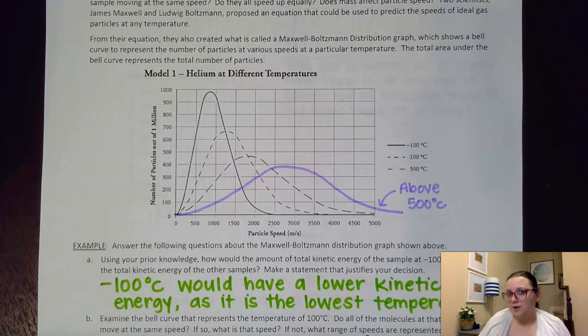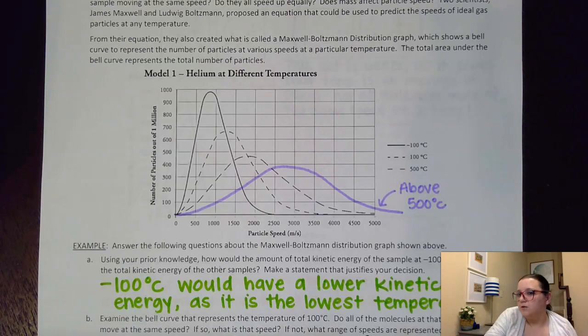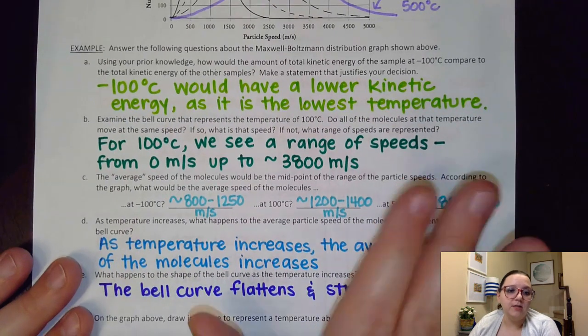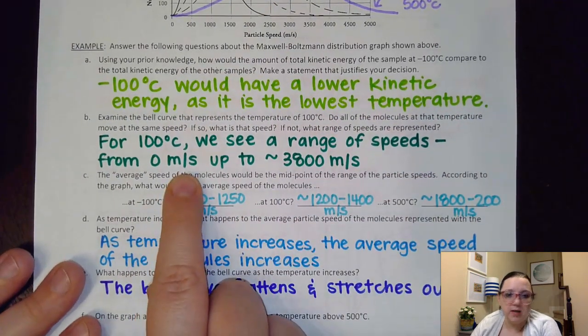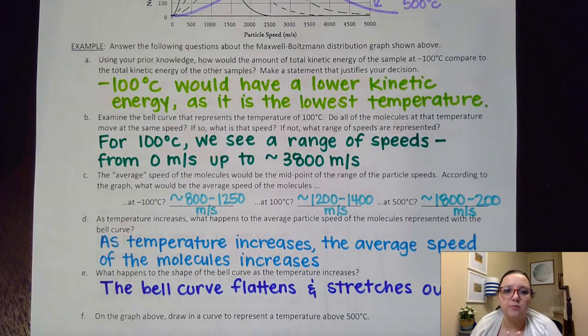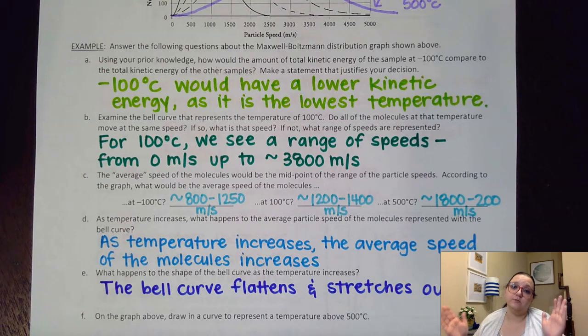So that's the key thing here that I want us to understand is that at a particular temperature we have some particles that are moving slow, we have some particles that are moving fast, we get that range of speeds there. Now I put a range here of zero meters per second up to approximately 3,800. You might have put a little bit different range there but the key thing is I want us to see that it is a range of speeds, not just one speed in particular.